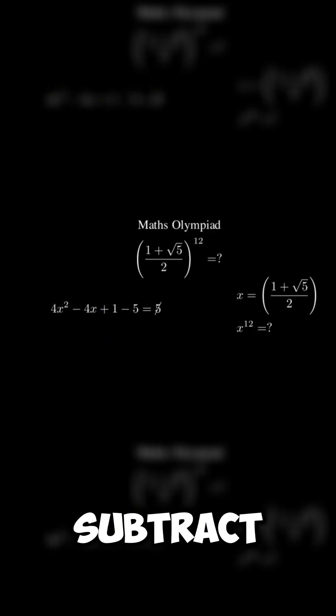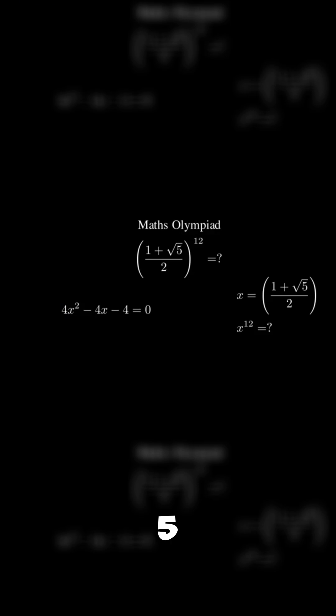After that we can subtract both sides by 5 and then divide them by 4. And we should get x square equal x plus 1.